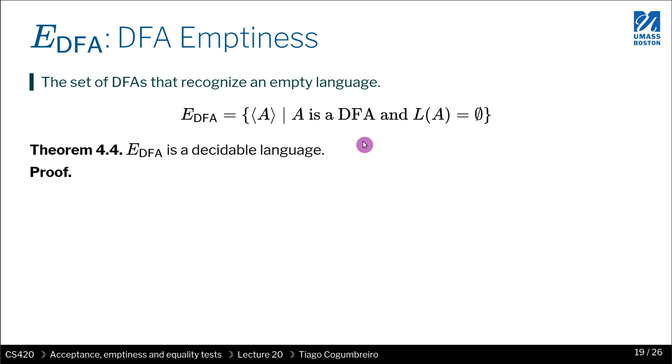So emptiness would mean that the DFA would have to reject everything. So there is simply a DFA that has no accepting states. Can we write an algorithm that is able to check if all the states are either accepting, if there is at least one accepting state? I think so, yes.